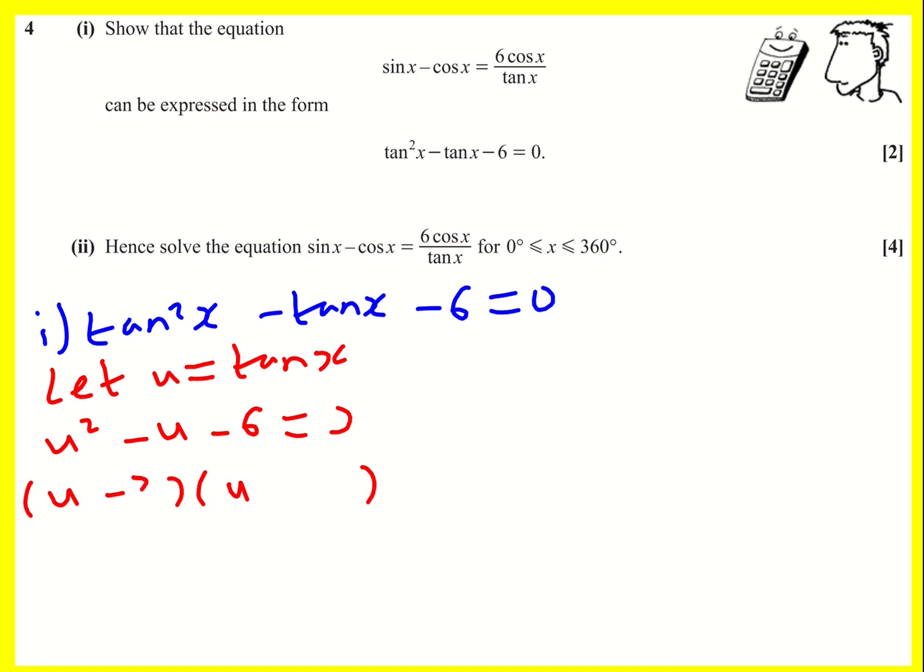It's going to be minus 3 and plus 2. So multiply to give minus 6 and add to give minus 1. So u equals 3 or minus 2. And that means that tan x equals 3 or minus 2.